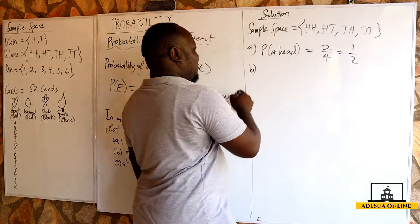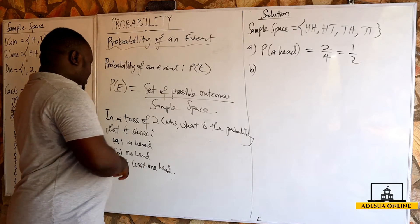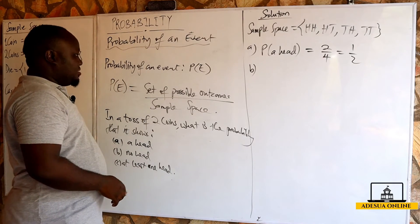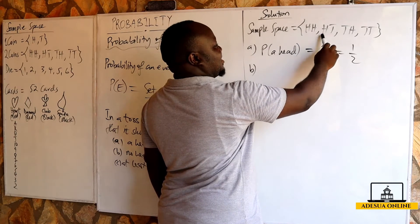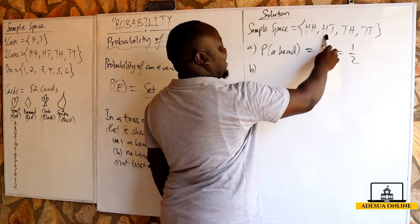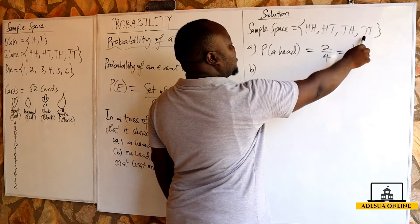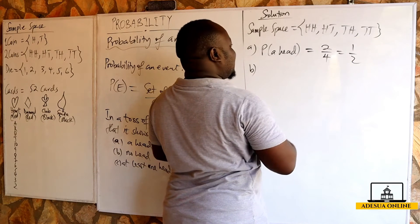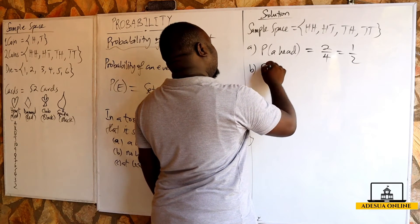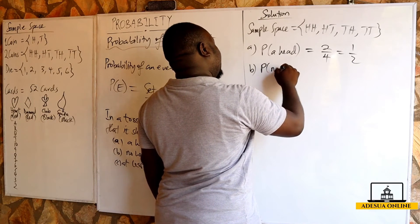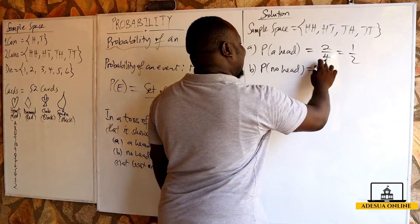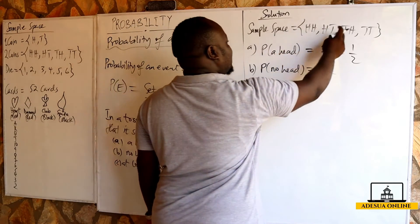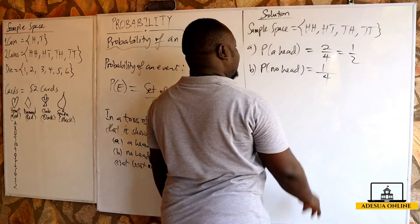Then we go to the second one: no head. When we talk about no head, there's a head here, there's a head here, there's a head here. So no head means both tails, which is 1. The probability of no head is equal to 1 over 4, since the sample space has 4 outcomes.